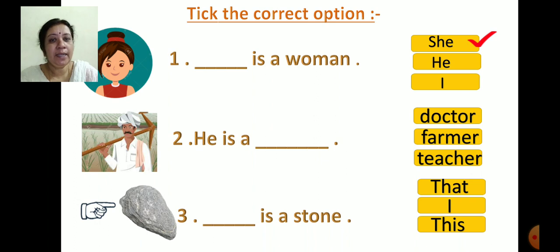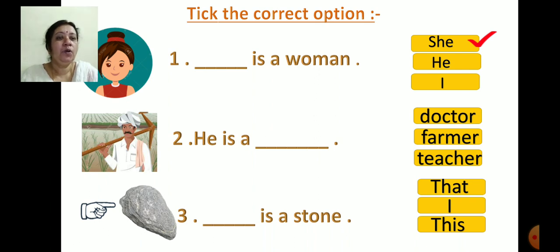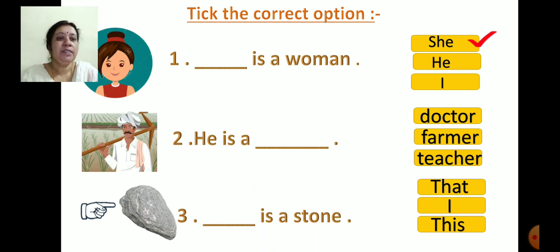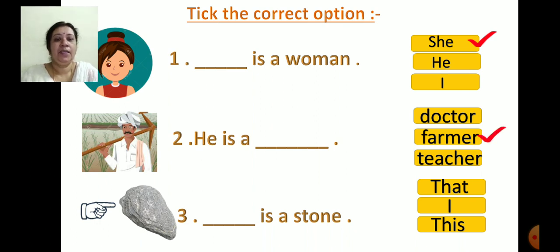Now see the second picture. Read: 'He is a dash.' The options are Doctor, Farmer, and Teacher. In the picture, who is this? Yes, right — a Farmer.